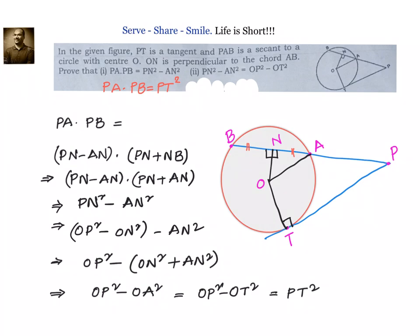What we need to prove: PA into PB equals PT square. Step one: PA equals PN minus AN, and PB equals PN plus BN. Since AN equals BN, PA into PB equals PN square minus AN square. Now consider triangle OPN: OP square equals ON square plus PN square, so PN square equals OP square minus ON square. Therefore PN square minus AN square equals OP square minus (ON square plus AN square).